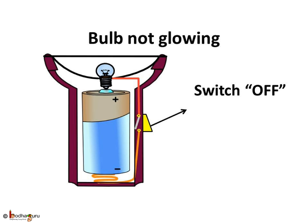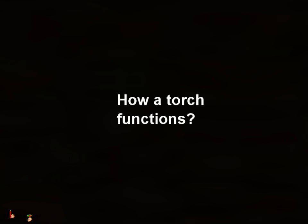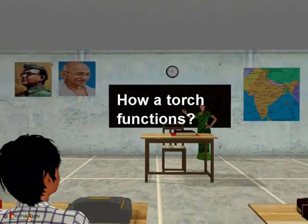When the torch is switched off, the circuit is broken. There is no complete path for the current to flow and hence the glowing bulb stops to emit light. That was all for today. Do analyze the torch at home and see how it functions. Bye Bye Kids!